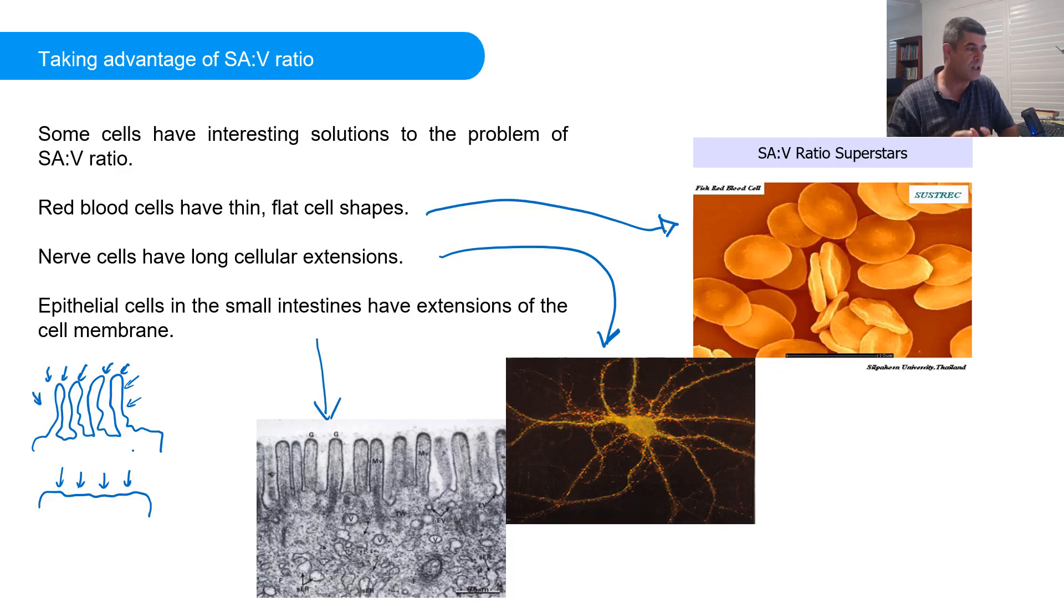So this whole idea of surface area to volume is a critical concept in biology. It's one we will come back to a lot and it's certainly one that we'll want to see you talk about during your responses to different questions because it's the key to so much of the structure and then linking into the function of biological systems. Thanks for watching.